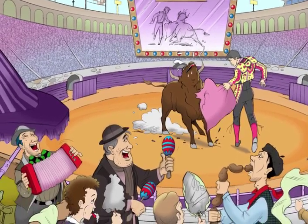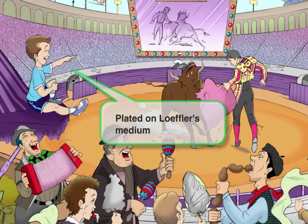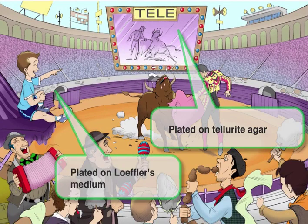To help you remember Loeffler's medium, we'll draw a kid who is laughing as he's watching the show. Laughter should remind you of Loeffler's — so Telly for Tellurite and laughter for Loeffler's.